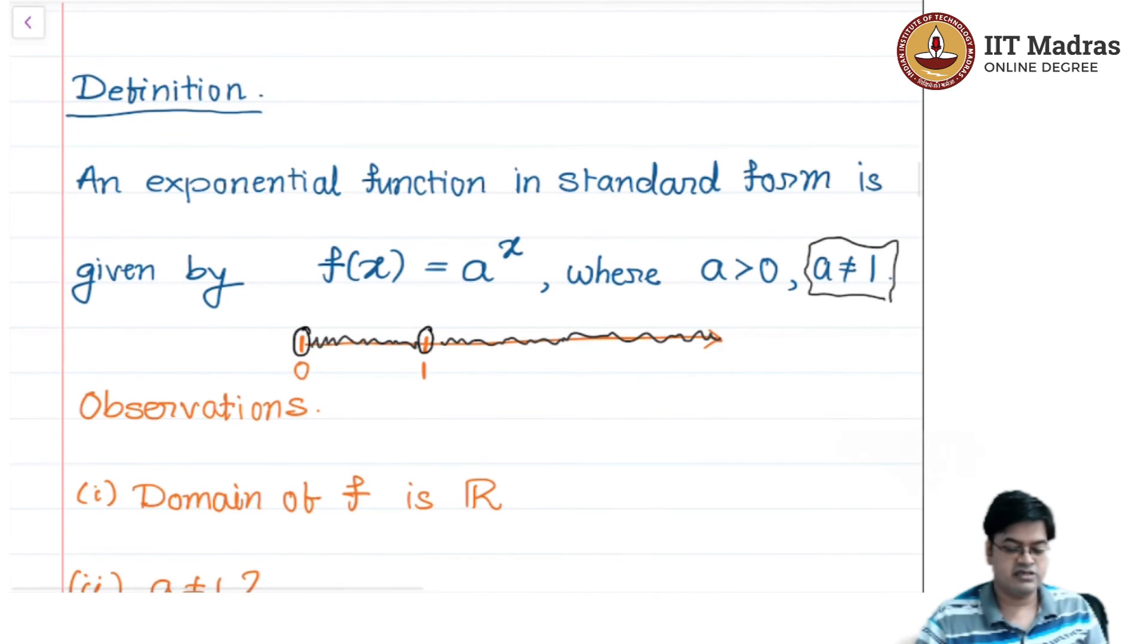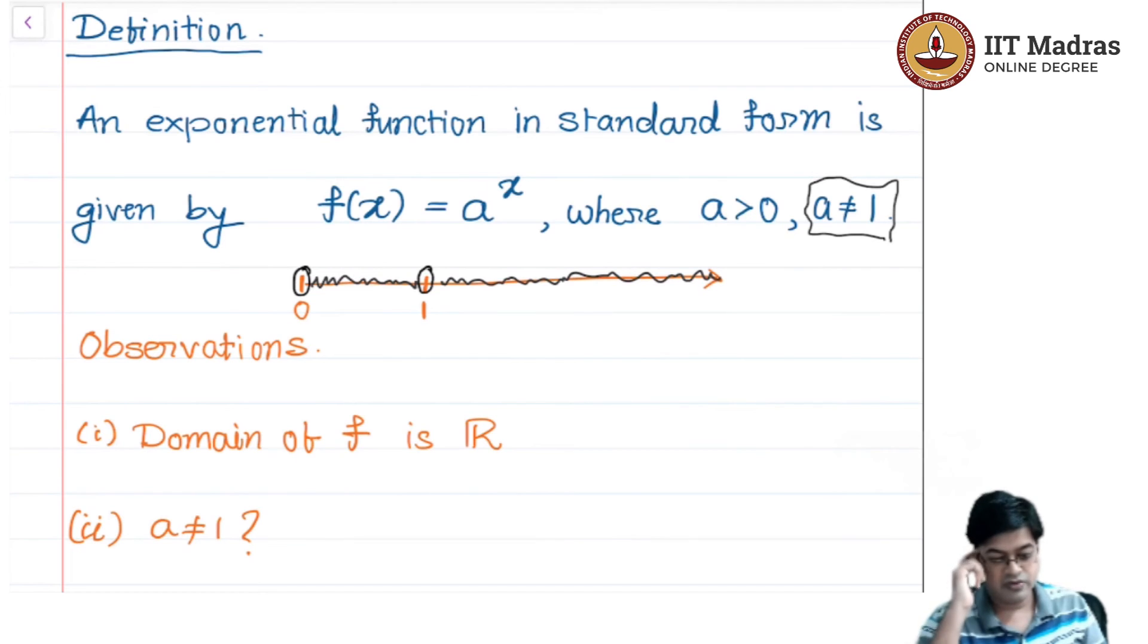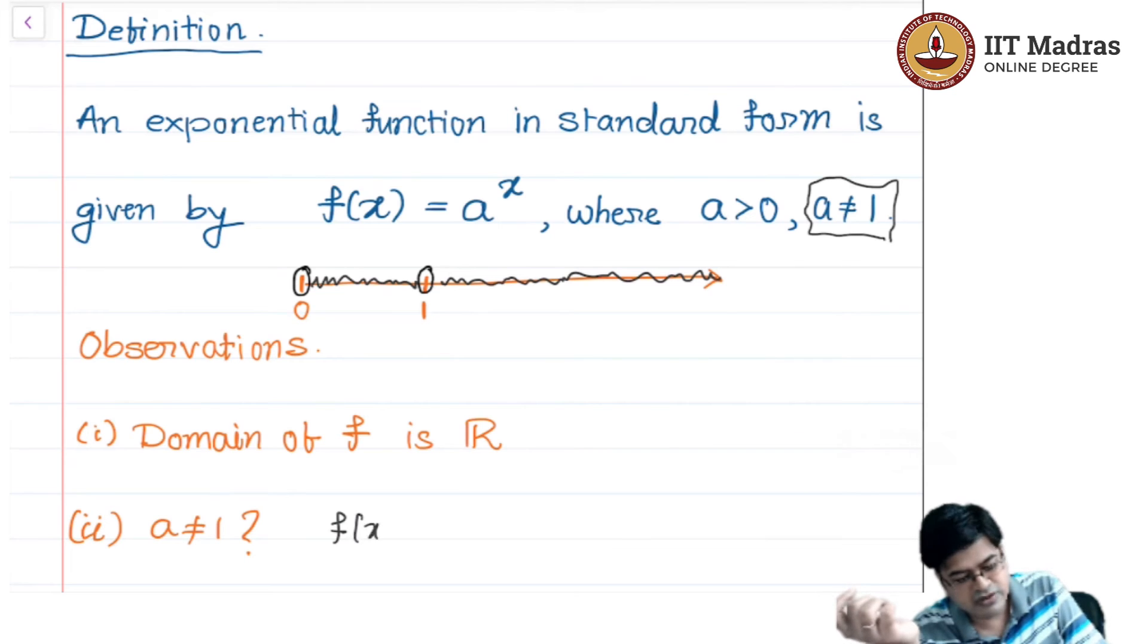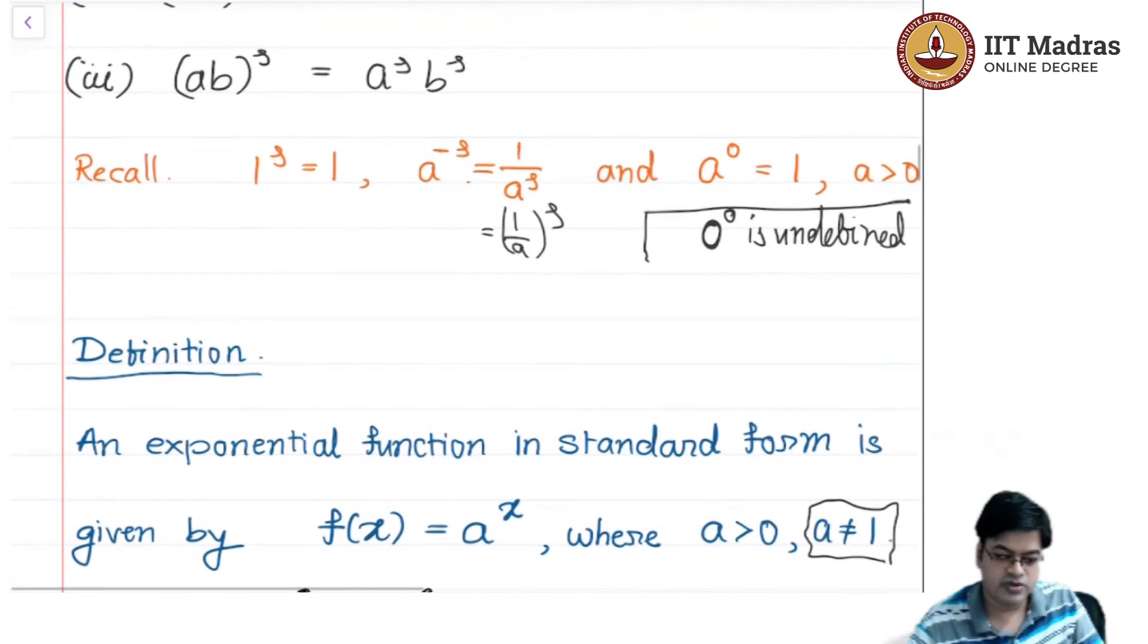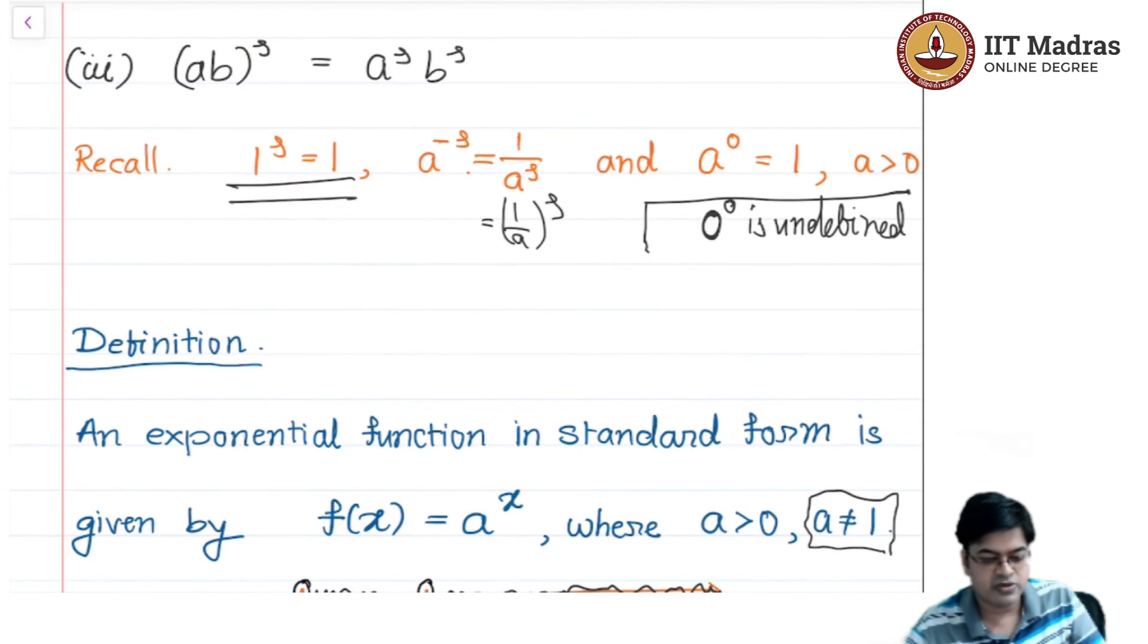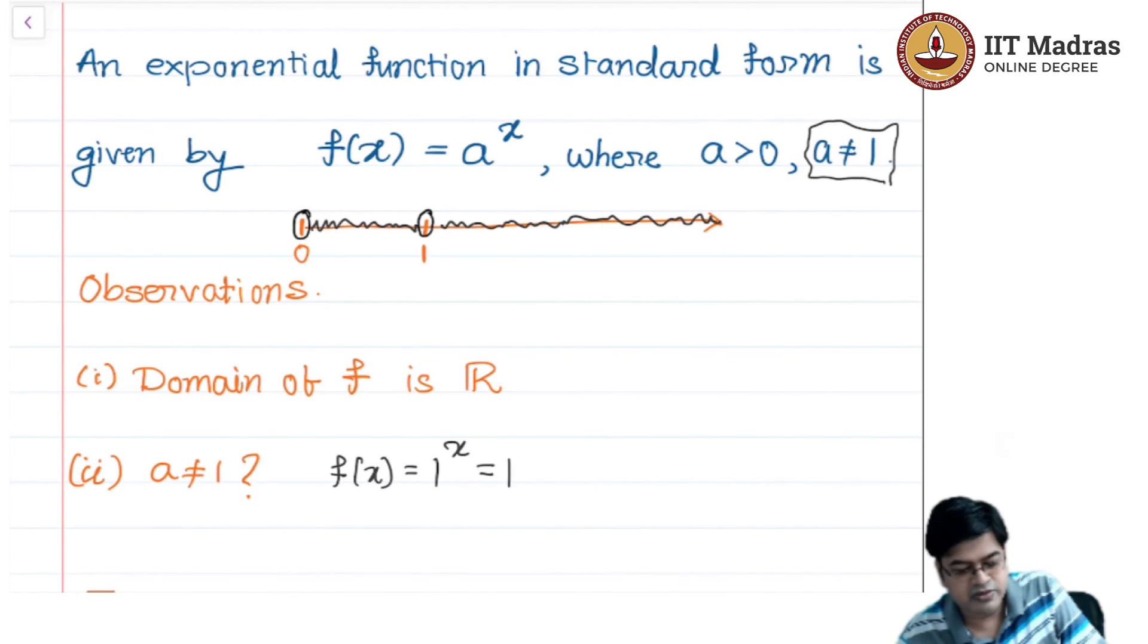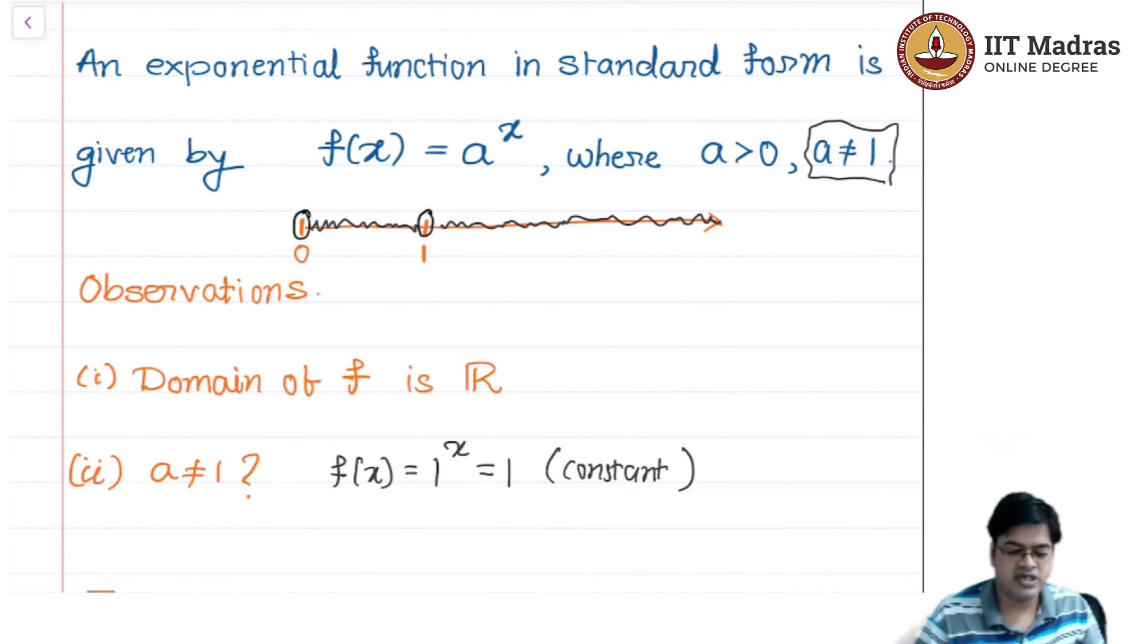Let us analyze this observation: why a is not equal to 1? Let us put a to be equal to 1. So f(x) = 1^x, but from the laws of exponents what do you know? 1 raised to s is always equal to 1. Therefore, 1^x will always be equal to 1. In fact, it is nothing but a constant function. I am not interested in handling a constant function. It is nothing but a horizontal line. y = 1 is the graph of a function. I am not interested in this. So let us not call this an exponential function. That is what we are saying in the definition.